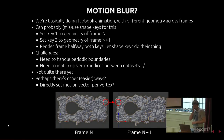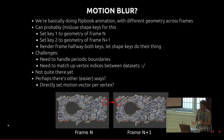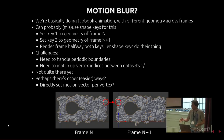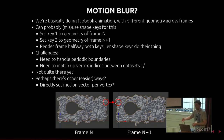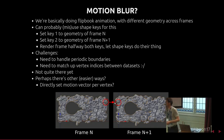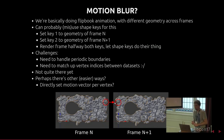Motion blur is something we looked at, but it's quite a challenge. We're doing flipbook animation — a new mesh every frame. We might be able to use shape keys: have two shape keys with frame N on the first key and frame N+1 on the second key, and hopefully the interpolation will work. One thing to handle is cells that cross the periodic boundary — we have to detect that and put the cell in the right position to make it look correct. We also need to make sure vertex numbers match up between frames. We haven't been able to use motion blur yet — if anybody has better ideas, please talk to me.